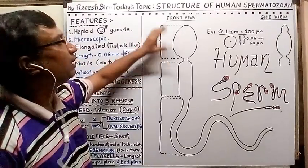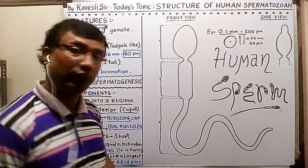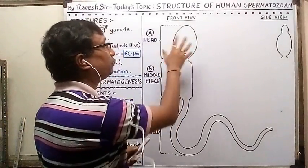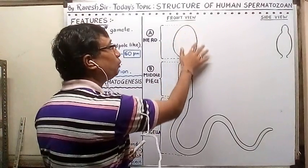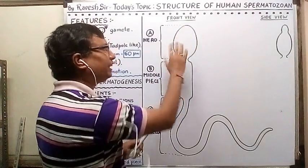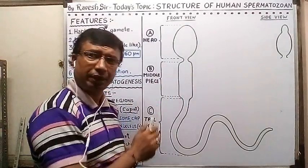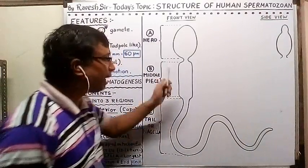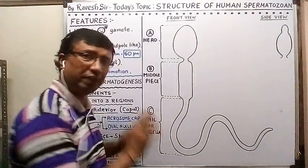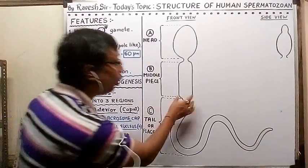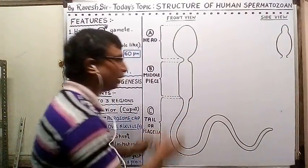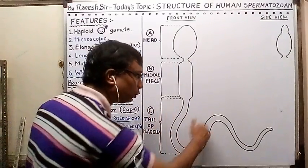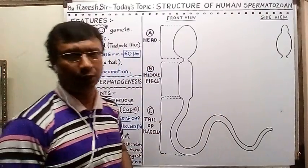When drawing, the outline of the sperm should show an almost oval-shaped head, then a narrow middle piece, with the remaining part being the tail — the longest part, about five times longer than the middle piece. You can draw it straight or in a wave-like manner.